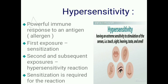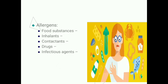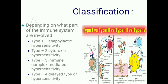Common allergens include food substances, inhalants, contactants, certain drugs, and infectious agents. Hypersensitivity is classified into four groups depending on which part of the immune system is involved: Type 1 (anaphylactic), Type 2 (cytotoxic), Type 3 (immune complex mediated), and Type 4 (delayed type hypersensitivity).